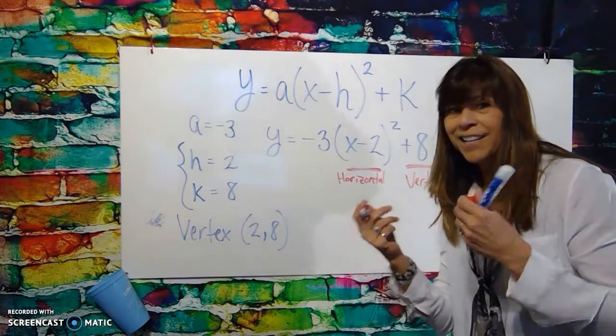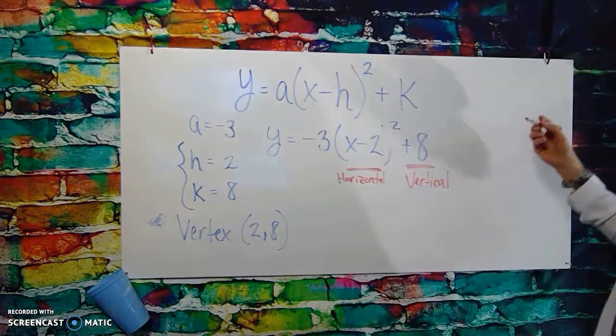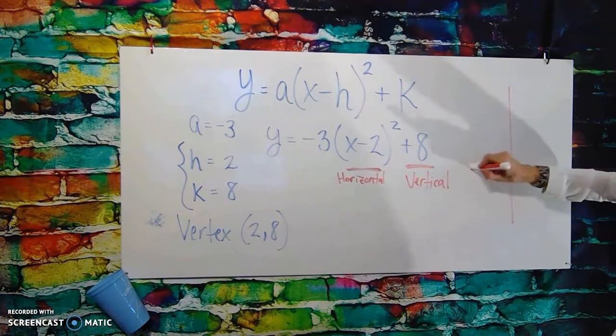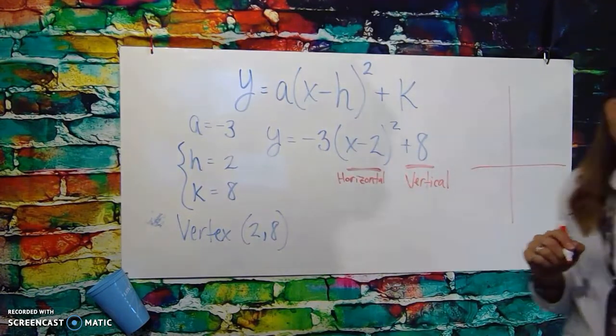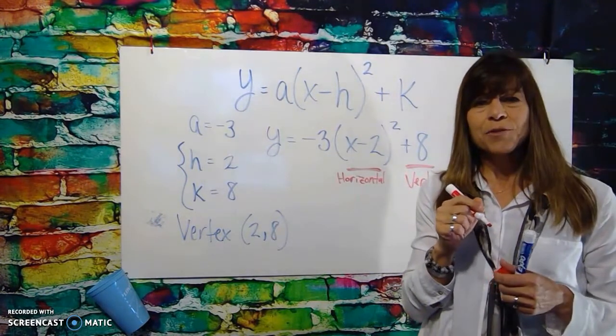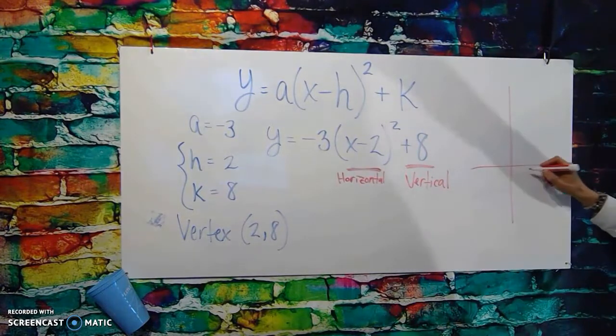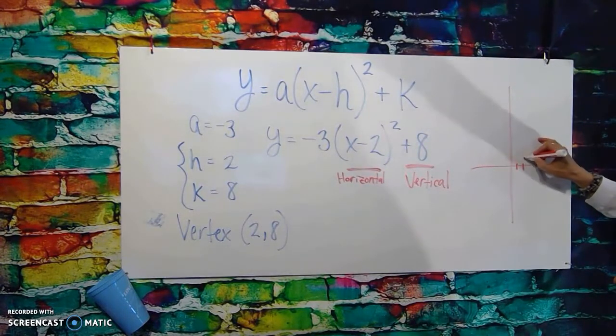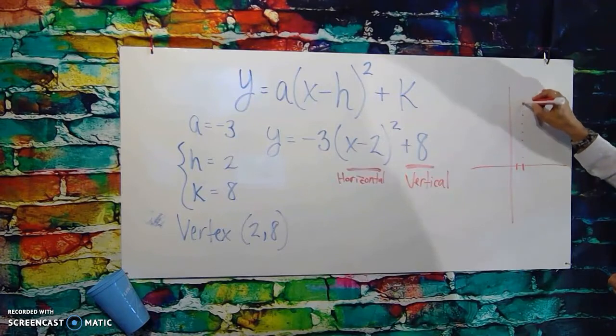Then come back and it'll look like this. All right, so we have our x-y axis. We know that our vertex is going to be at (2, 8). So 1, 2, 3, 4, 5, 6, 7, 8.